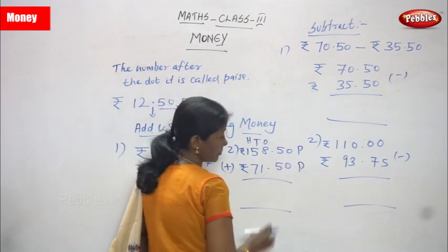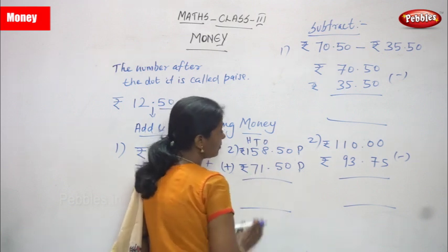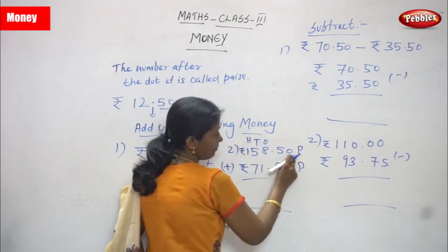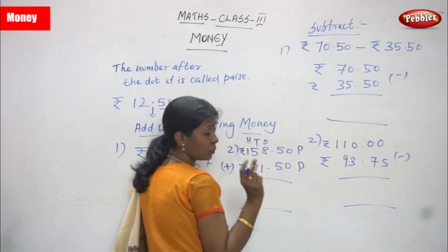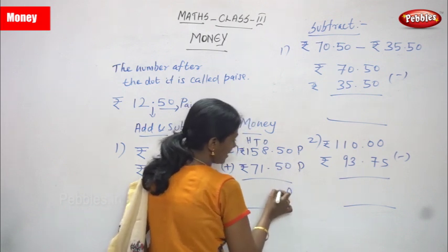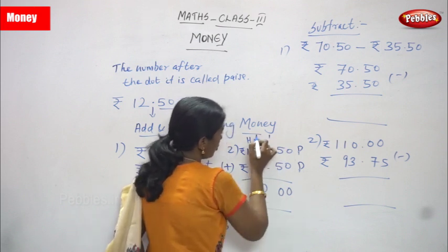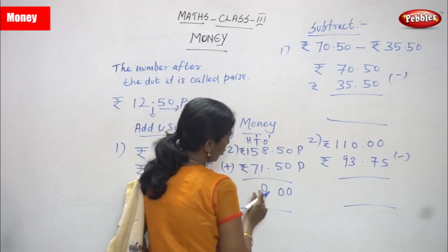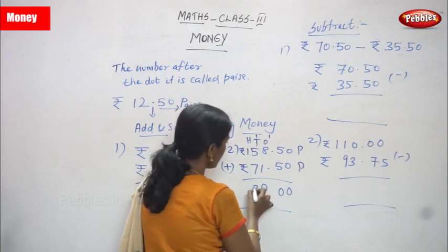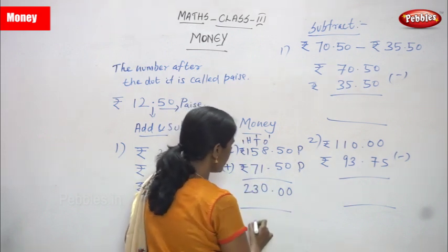Paise means only two digits come after the point — don't forget that. Write the numbers carefully according to the digit place value. Zero, then 5 plus 5 is 10 — write 0 and carry 1. 8 plus 1 is 9, 9 plus 1 is 10 — write 0 and carry 1. 5 plus 1 is 6, 6 plus 7 — counting on: 13 — write 3 and carry 1. 1 plus 1 is 2. The answer is 230 rupees 00 paise.